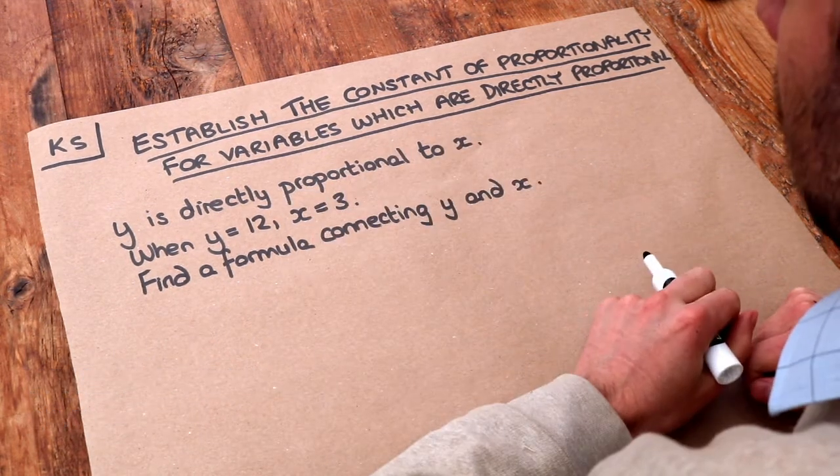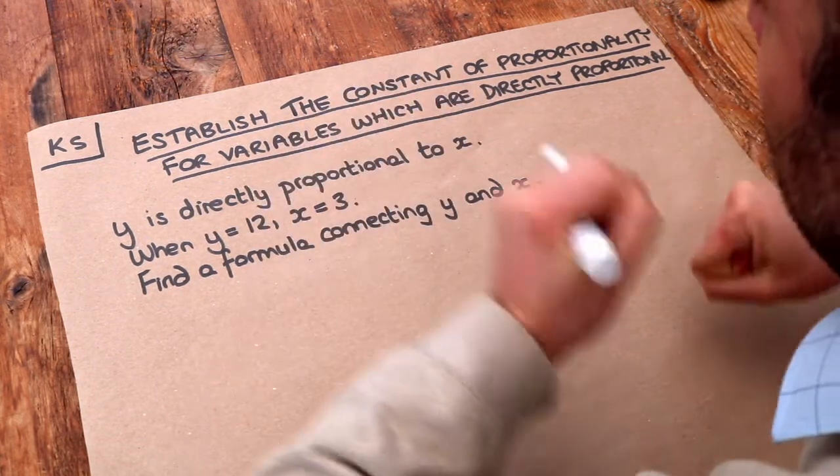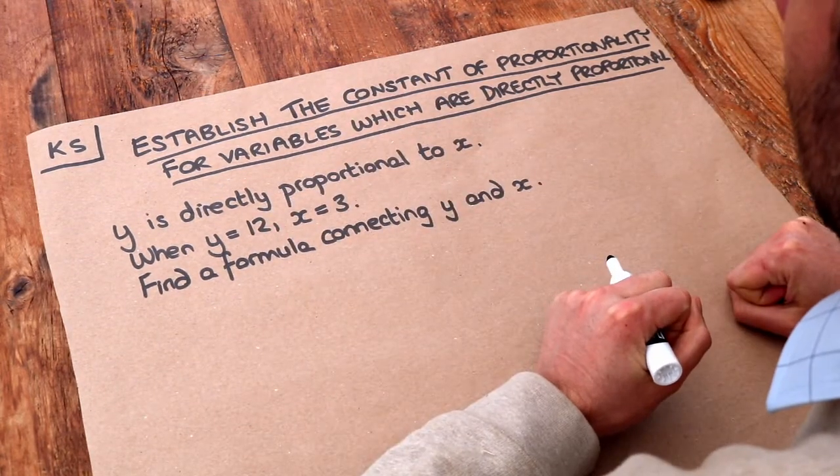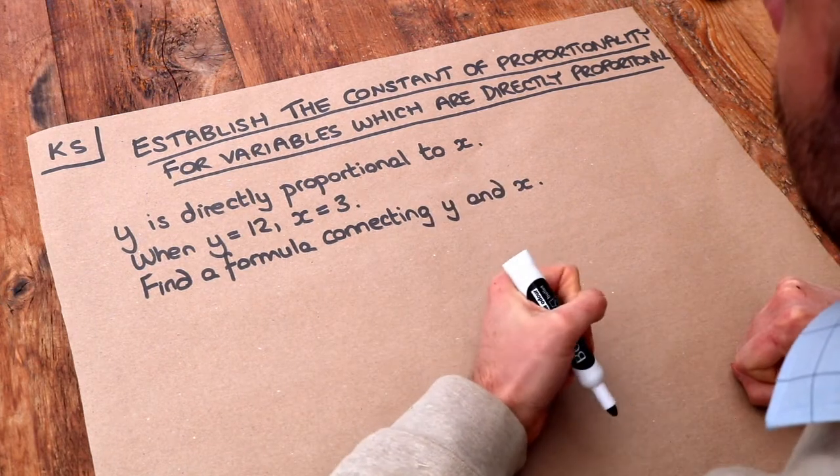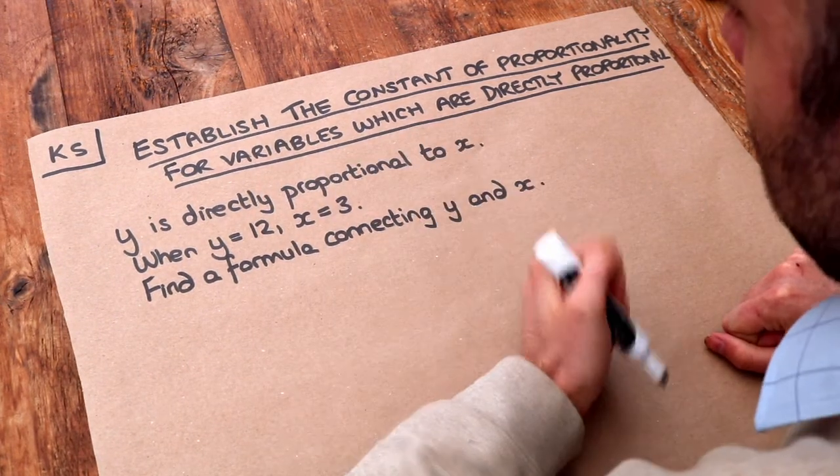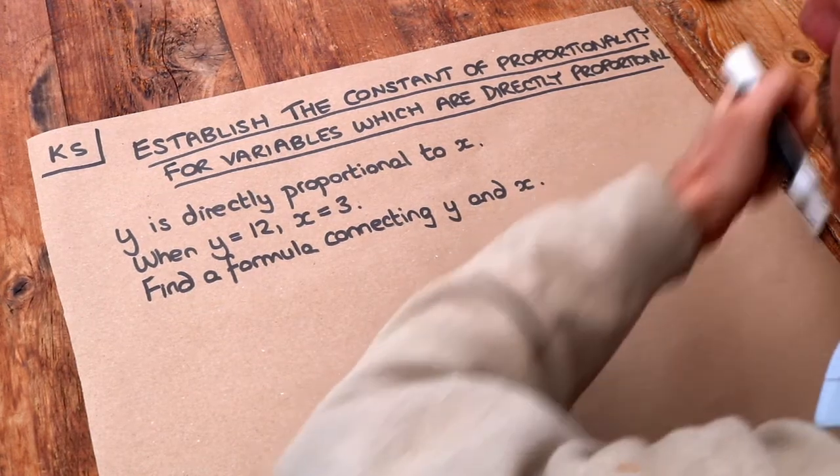Now what do I mean by directly proportional? I just mean that two different quantities scale in the same way. For example, if I was to double the number of sweets I buy in a shop, that would double the cost.